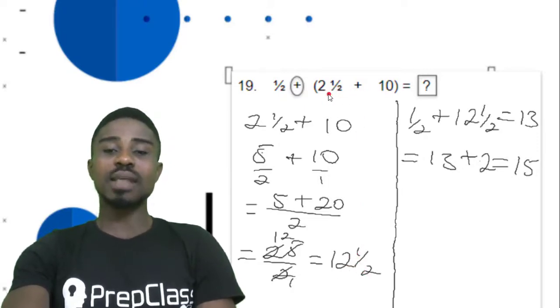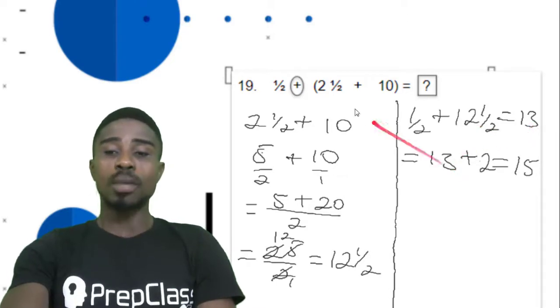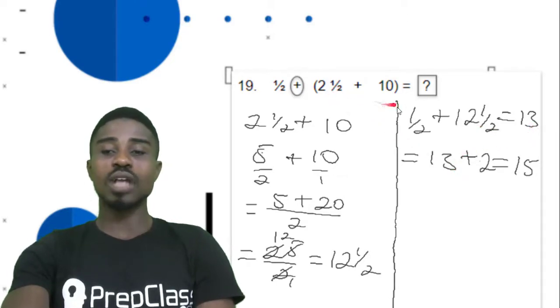Then we now add it to this half. So 12 and a half plus half will give us 13, because half plus half is 1. Then 12 plus 1 is 13. Then 13 plus 2, because there are 2 numbers here, we'll add to it. 13 plus 2 will give us 15.